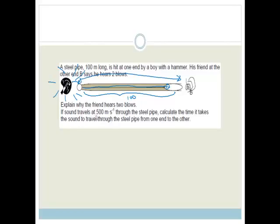Now, it says, if sound travels at 500 meters per second through the steel pipe, calculate the time it takes the sound to travel through the steel pipe from one end to the other. So, that's pretty easy. We've got velocity is equal to delta x over delta t. And we know that the delta x is 100 meters, because they told us it was 100 meters long. And the speed, the sound travels at 500. So, we want delta t. They've asked us to calculate the time it takes. So, let's rearrange it. Delta t is equal to delta x over v, which equals 100, divided by 500. We can just cancel the noughts. So, that's one-fifth, which is 0.2 seconds.